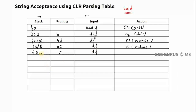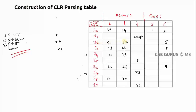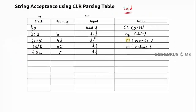Remaining input is D dollar. Top state is I2 and input symbol is D. Check I2 to D: S7 — shift. Shift D onto the stack. Stack becomes: dollar 0 2 7, and remaining input is dollar.